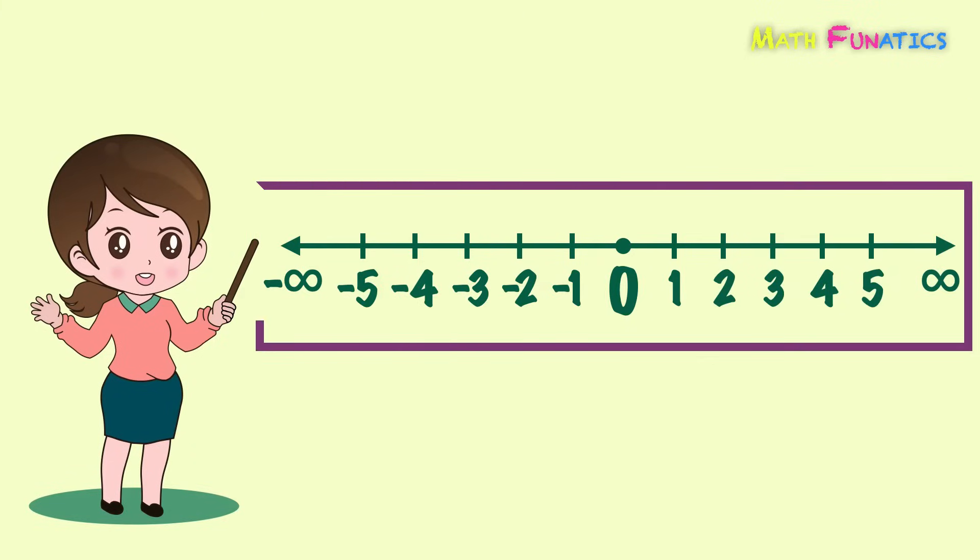This entire set of numbers from 1, 2, 3, and so on up to infinity, and negative 1, negative 2, negative 3, and so on down to negative infinity, and the number 0 is what we call integers.